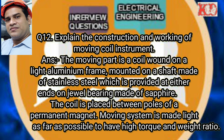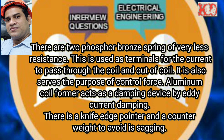Question number twelve: Explain the construction and working of a moving coil instrument. Construction: The moving part is a coil wound on a light aluminum frame, mounted on a shaft made of stainless steel, provided at either end with jewel bearings made of sapphire. The coil is placed between the poles of a permanent magnet. The moving system is made as light as possible to have a high torque-to-weight ratio. Two phosphor bronze springs of very low resistance serve as terminals for current to pass through and out of the coil, and also provide the controlling force. The aluminum coil former acts as a damping device by eddy current damping. There is a knife-edge pointer and a counterweight to avoid sagging.